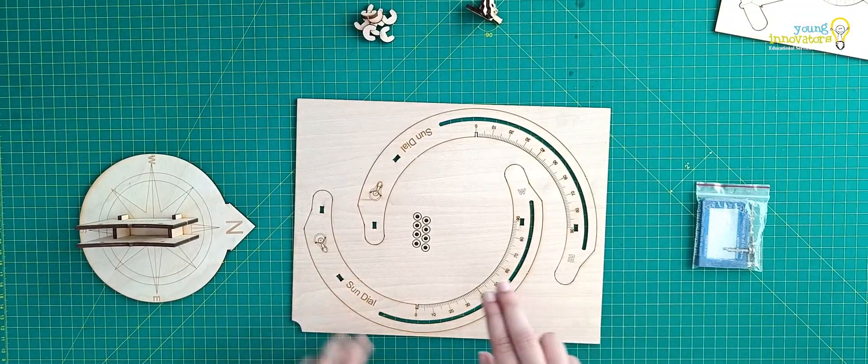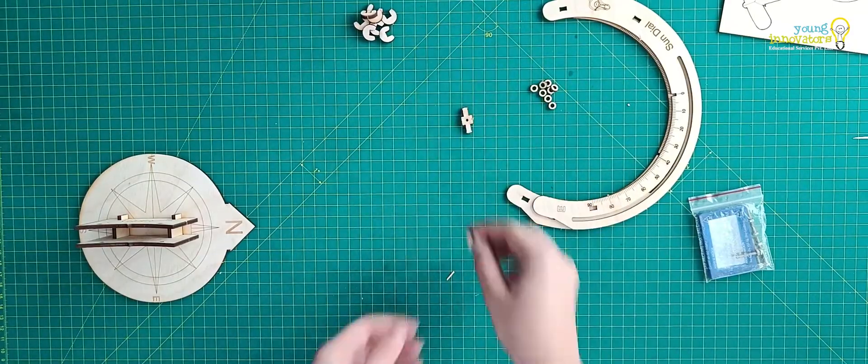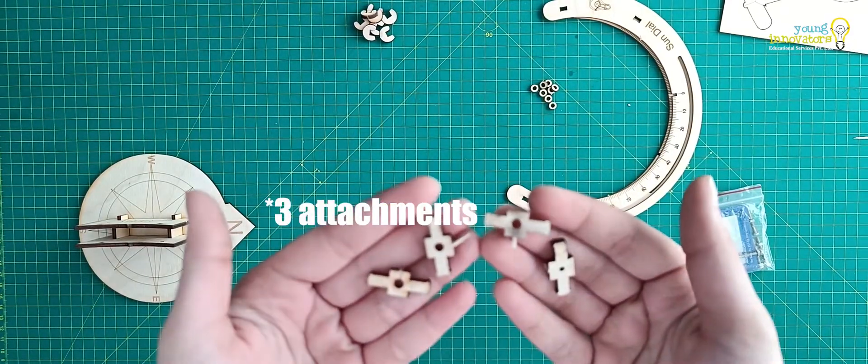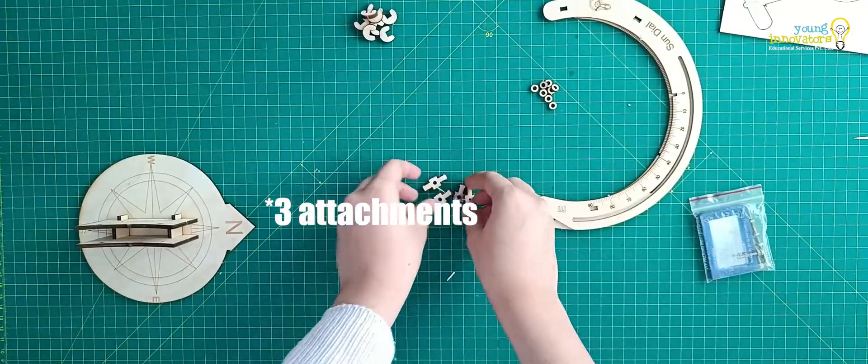Separate the parts and keep them ready along with the screws. Now take three of these joints and attach one end of these to the arm plate and other to the second arm plate.